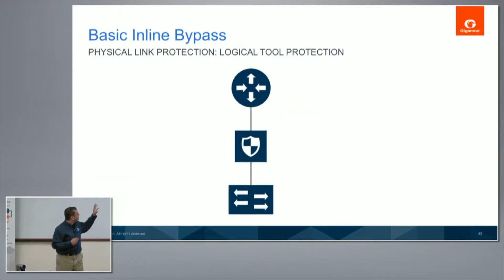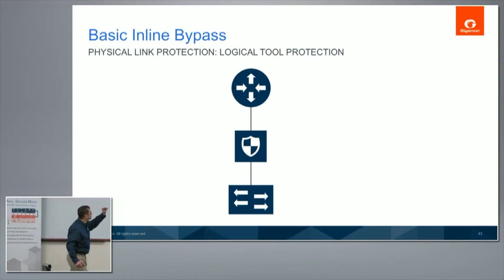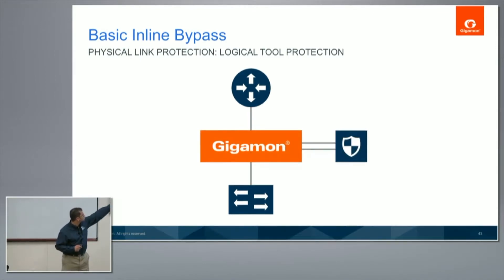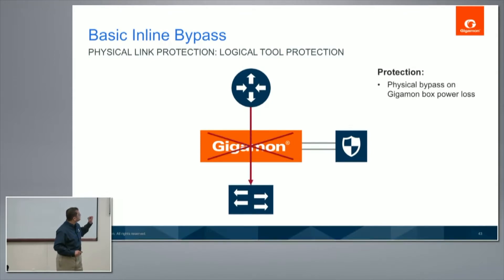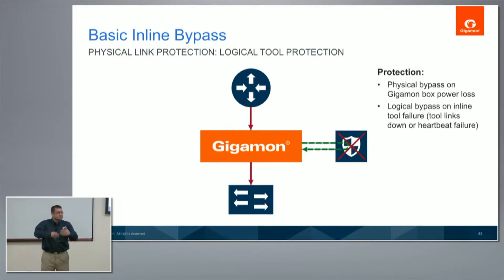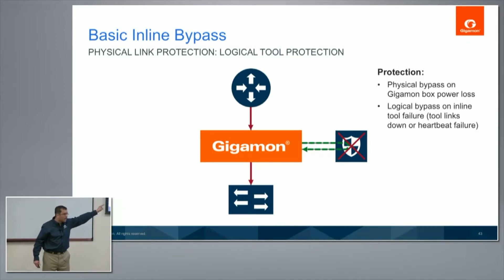Let's take this into the realm of SSL decryption. Here's a security tool with a router and switch connected. When Gigamon comes into play, traffic flows through that tool and comes back in. There are two aspects: physical bypass — if the Gigamon goes down, relays close and traffic flows through without the tool; and logical bypass — if the security tool goes down, Gigamon bypasses it, keeping the remaining tools active. We send heartbeats to constantly monitor the health of all these tools.